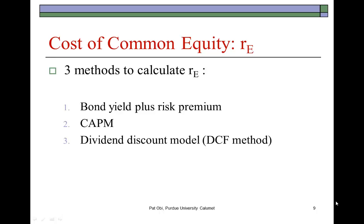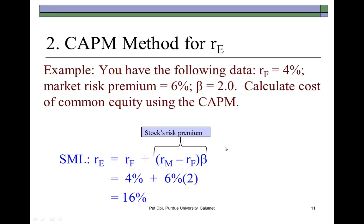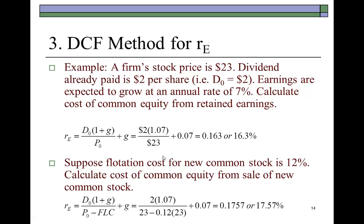This is the second and concluding part of the presentation on cost of capital. In the last section, we showed that there are three conventional methods for estimating the cost of common equity: the bond yield plus risk premium approach, the capital asset pricing model approach, and the third — the dividend discount model, which is the same as the discounted cash flow method. We proceed to that method right here, which shows that based on the constant growth formulation, we can find the required rate of return on the firm's common equity, which is the same thing as the cost of common equity.